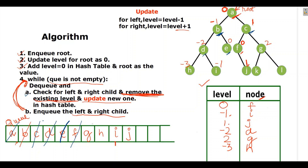Then dequeue G and check its children. K is the left child: two minus one equals one. L is the right child: two plus one equals three. Update hash table: for one, delete the existing entry and write K. For three — three is not there — so write three with L. Push K and L into the queue.